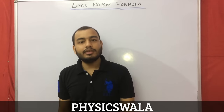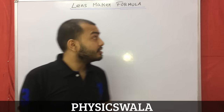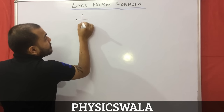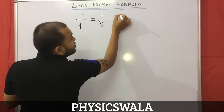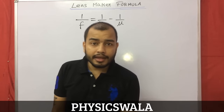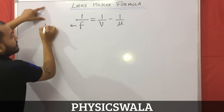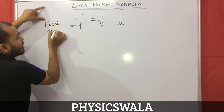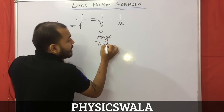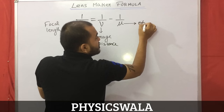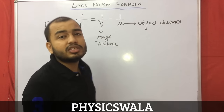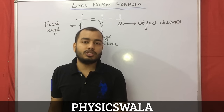Hey students, today I'm here to discuss how to apply the lens maker formula. The lens maker formula is 1/f = 1/v - 1/u. This is used to find the position of image in lenses. f is the focal length, v is the image distance, and u is the object distance.